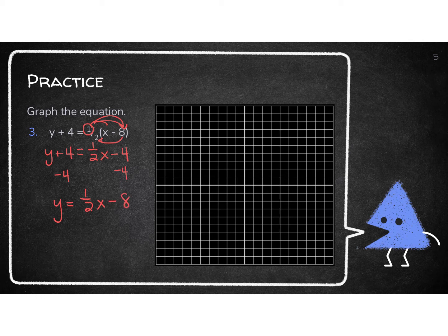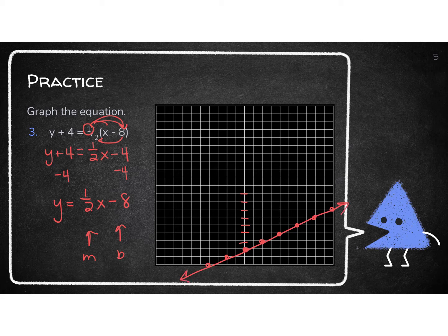That minus 8 is my b — that negative 8 — so I'm going to start down at negative 8. And I'm going to move with my m, which is still positive, so I'm going to go up 1 to the right 2. The opposite direction is down and to the left. Here's my line. My slope is positive, so I should be increasing from left to right — and I am — so I know I did it right.